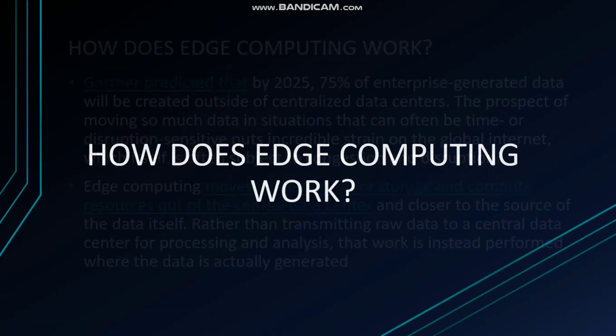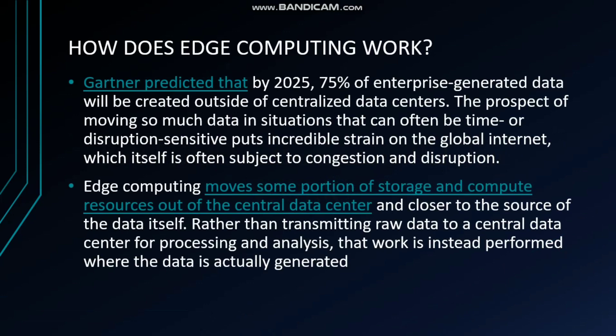So how does edge computing work? Gartner predicted that by 2025, 75% of enterprise-generated data will be created outside of centralized data centers. The prospect of moving so much data in situations that can often be time or disruption sensitive puts incredible strain on the global internet, which itself is often subject to congestion and disruption. So edge computing moves some portion of the storage and compute resources out of the central data center and closer to the source of the data itself, rather than transmitting raw data to the central data center for processing and analysis — that work is instead performed where the data is actually generated.